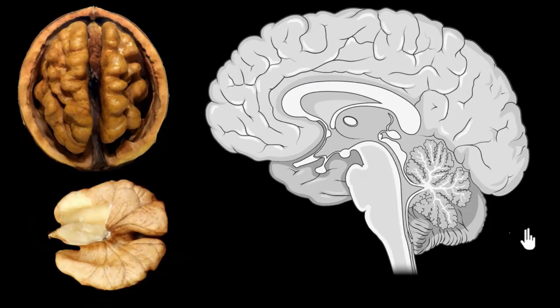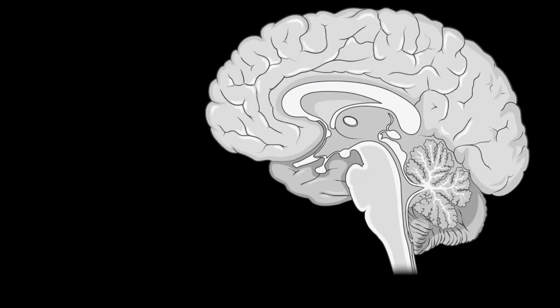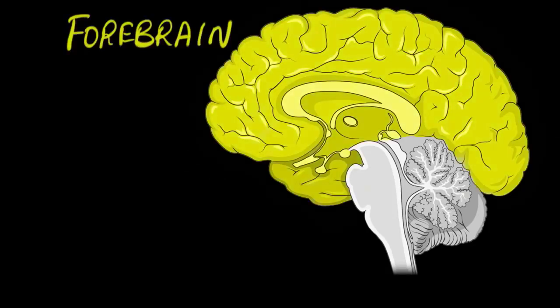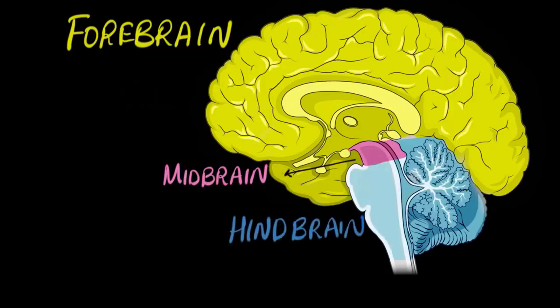Let's look at the different parts. We can broadly divide our brain into three parts: the forebrain, which is this big yellow section; the midbrain, which is this tiny pink section; and the hindbrain, or the lower brain, which is this blue section. Usually when we say humans have a big brain, we're basically talking about the forebrain.